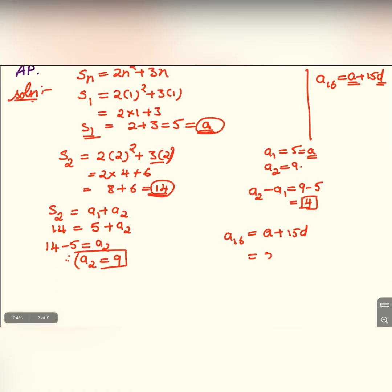That is 5 + 15 × 4. 5 plus 15 fours are 60, so 60 + 5 = 65. a₁₆ = 65.